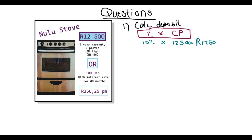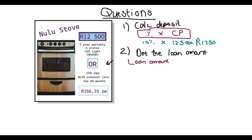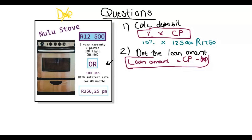Next, if you buy this on a hire purchase agreement, they will ask you to determine or calculate the loan amount. Keep in mind that in the beginning you already paid the deposit, so the loan amount is the cash price minus the deposit. We have twelve thousand five hundred rand minus the deposit we just worked out, giving an answer of eleven thousand two hundred and fifty rand.